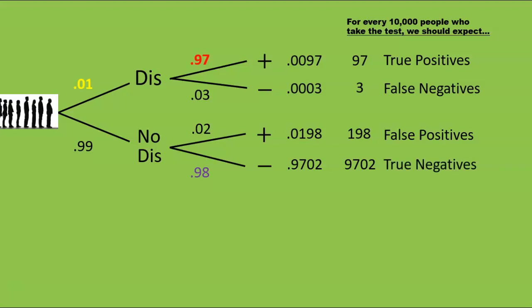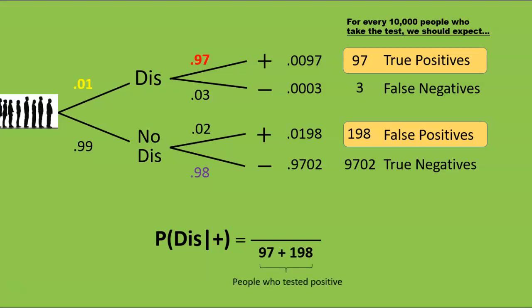We're now in a good position to answer our question. What's the probability of actually having the disease given a positive test result? The key is to remember that this is a conditional probability. We know something. We know that we've selected someone who tested positive. So, we're not dealing with the full line of 10,000 people. We know we've got someone in one of these two groups.